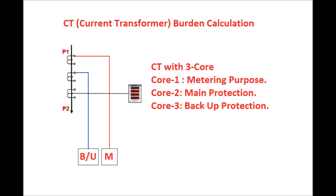A CT with three cores has been shown in this figure. Core 1 is the metering core and it is taken to all the meters — the detail meter, megawatt meter, ammeter and other meters. Core 2 and Core 3 are the protection cores. Normally, Core 2 is taken for the main protection. If it is a feeder protection, then main protection is distance protection. If it is a transformer protection, then main protection is differential protection. Core 3 is the backup protection — backup overcurrent and earth fault protection for a transformer, or directional overcurrent and earth fault protection for a feeder.